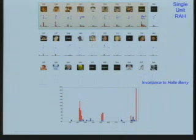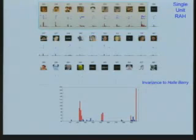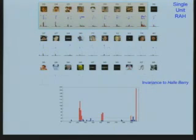These neurons are very invariant. This is not a purely visual area anymore — it's the endpoint, sort of, of all sensory processing. A lot of that information gets sent to the hippocampus. You have neurons here that respond to Halle Berry whether it's her photograph, whether she's dressed up in her catsuit, whether there's a line drawing of her, or even the text 'Halle Berry' — the neuron responds very strongly. It doesn't respond to other text, doesn't respond when another woman is dressed in a catwoman suit. It responds very selectively to Halle Berry.